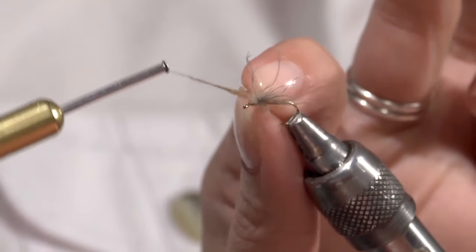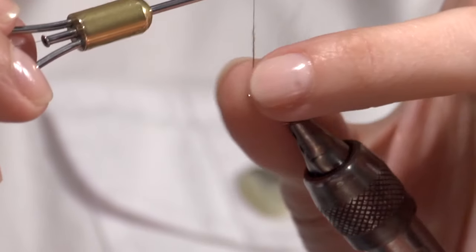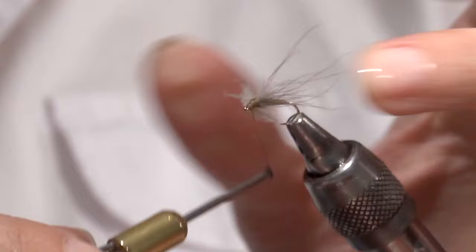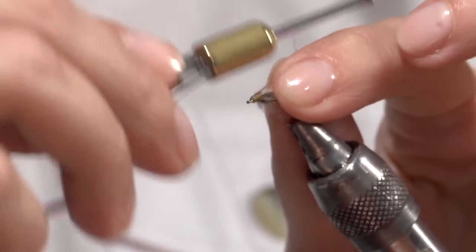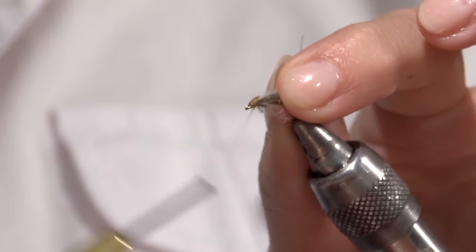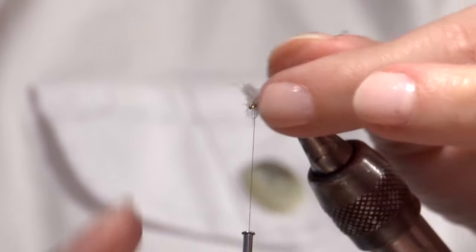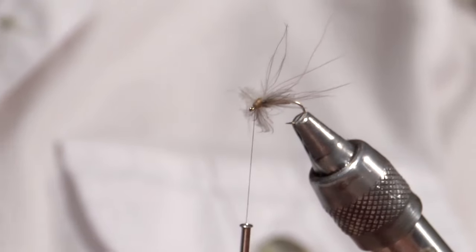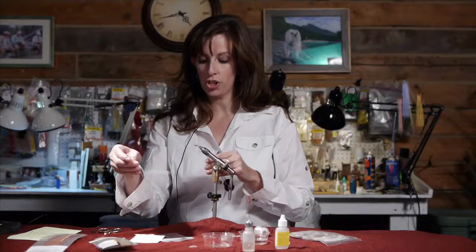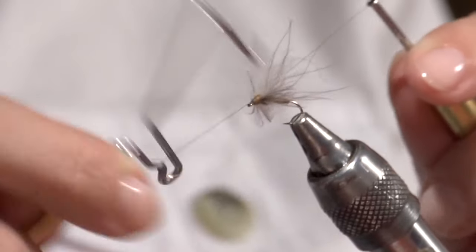And then in front of the wing, behind the eye, we make a couple of small wraps. Careful not to get too close to the eye. Pull that wing back if you need to. And then we want to end up with our thread right behind the eye. And it's at this point, I go ahead, take my whip finisher, and tie it off with a few good knots.